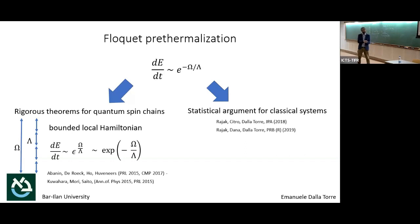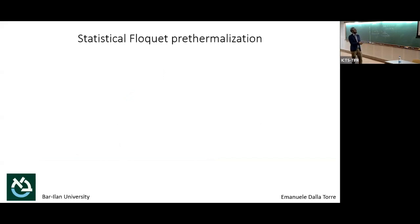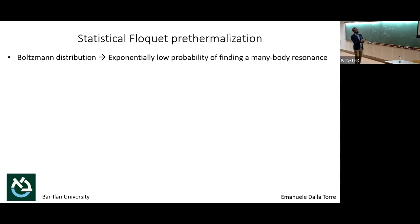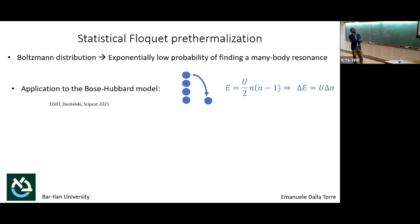We claim you can still use a statistical argument. Marion Bukov and Sergey may have done related work — if this resonates parametrically with something you've done, come talk to me. We coined the term 'statistical Floquet pre-thermalization,' in contrast to the rigorous one. The idea: why does the exponential suppression appear? Because of the Boltzmann distribution. The assumption is I have a system at very low temperature, I try to drive it, and the system tries to probe some resonances, but the probability of finding that resonance is very small because it is related to the Boltzmann distribution.